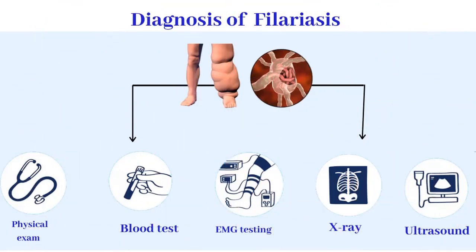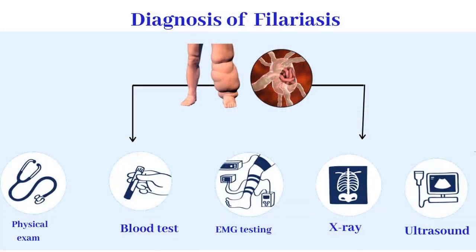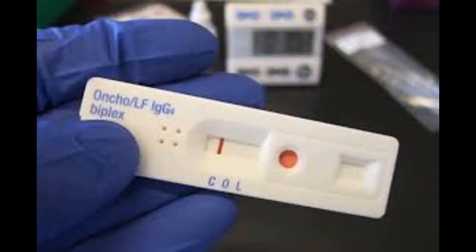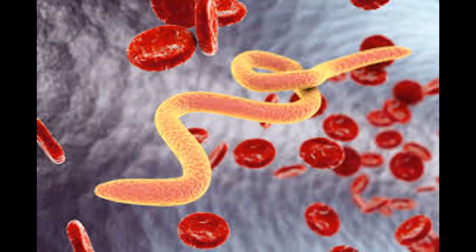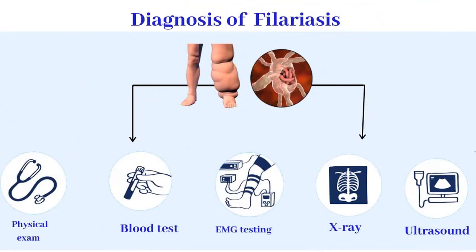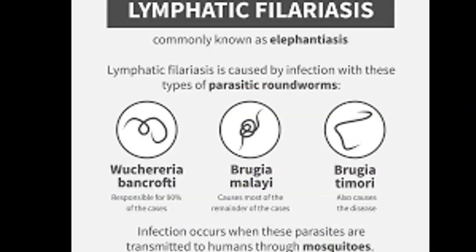Diagnosis. A blood smear is a simple and fairly accurate diagnostic tool, provided the blood sample is taken during the period in the day when the juveniles are in the peripheral circulation. Technicians analyzing the blood smear must be able to distinguish between Wuchereria bancrofti and other parasites potentially present. A polymerase chain reaction (PCR) test can also be performed to detect a minute fraction — as little as 1 pg — of filarial DNA. Some infected people do not have microfilariae in their blood; as a result, tests aimed to detect antigens from adult worms can be used. Ultrasonography can also be used to detect the movements and noises caused by adult worms. Dead, calcified worms can be detected by X-ray examinations.